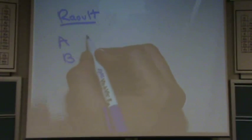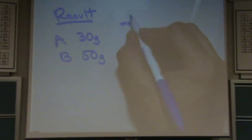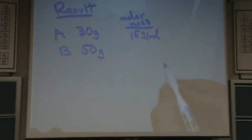Let's say we have compound A and B. Let's say we have 30 grams of this and 50 grams of this, okay? And let's say the molar mass of A is 15 grams per mole, and the molar mass of B is 50 grams per mole, okay?